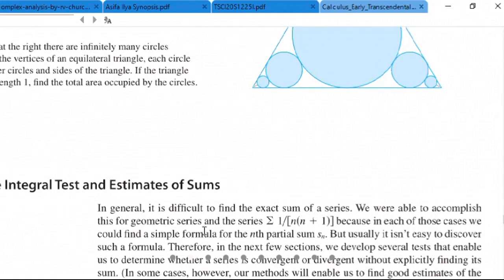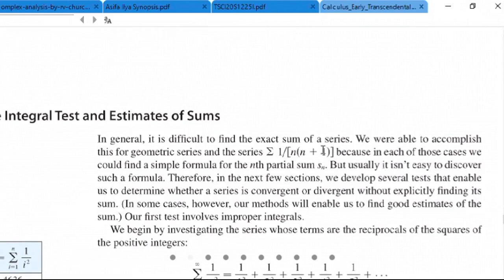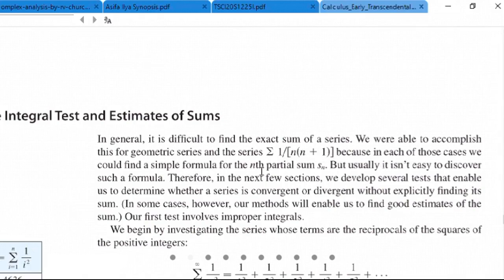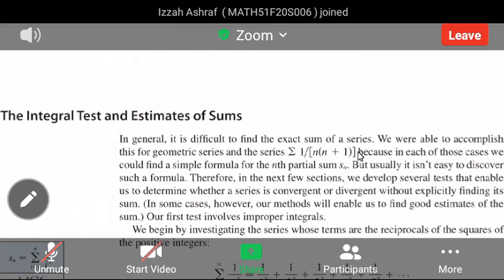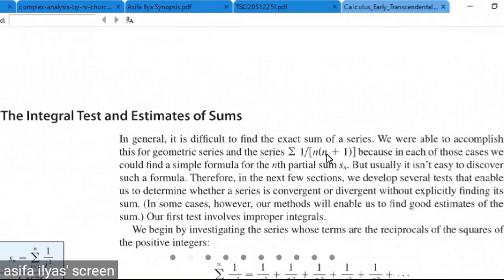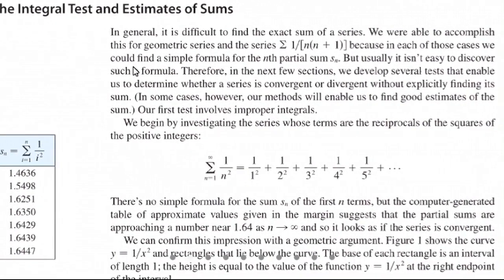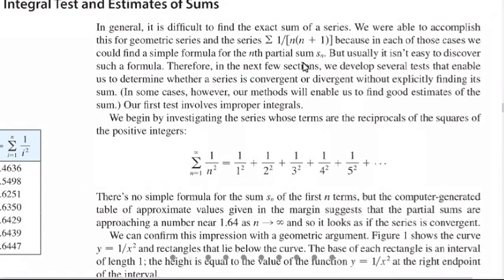In general, it is difficult to find the exact sum of a series. We were able to accomplish this for geometric series and for the series summation of 1 over n(n+1), because in each of those cases we could find a simple formula for the nth partial sum S_N. In general, it is not easy to discover such a formula.